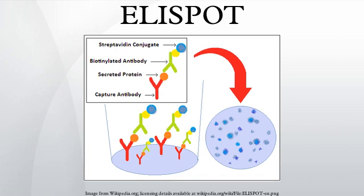After washing the wells to remove cells, debris, and media components, a biotinylated polyclonal antibody specific for the chosen analyte is added to the wells. This antibody is reactive with a distinct epitope of the target cytokine and is employed to detect the captured cytokine. Following a wash to remove any unbound biotinylated antibody, the detected cytokine is then visualized using streptavidin conjugated to an enzyme — either horseradish peroxidase or alkaline phosphatase — and a precipitating substrate. The colored end product, typically a dark blueish-black spot, represents an individual cytokine-producing cell. The spots can be counted manually or using an automated reader to capture microwell images and analyze spot number and size.